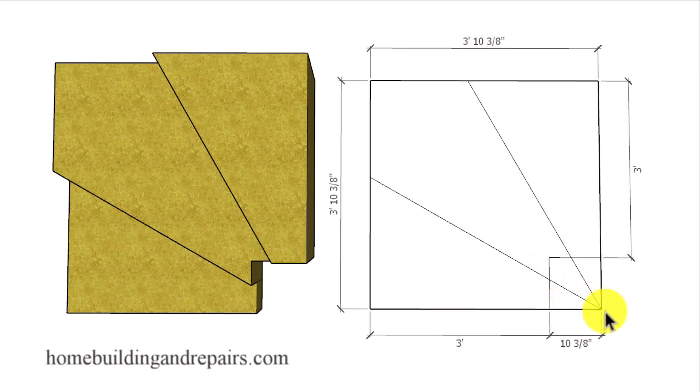And in order to make this work, we're going to have to go 10 and 3 eighths of an inch larger in this direction here and in this direction here. So we're going to be able to work with our original three foot wide measurement here. And if the width of your stairway is a little shorter or longer then you might need to adjust this measurement here.